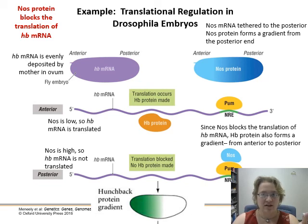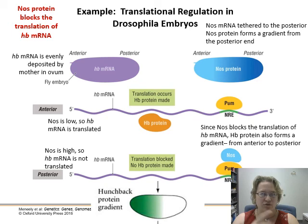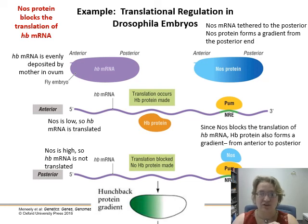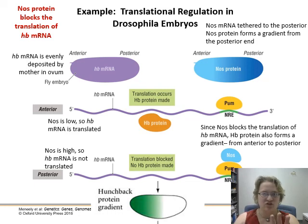The hunchback protein begins to form a gradient from anterior to posterior, and these genes have a trickle-down effect. This is the very beginning of what makes the front of an animal the front and the back the back — literally a two-gene combination, at least in Drosophila. A lot of other stuff starts coming in once this gradient is formed.